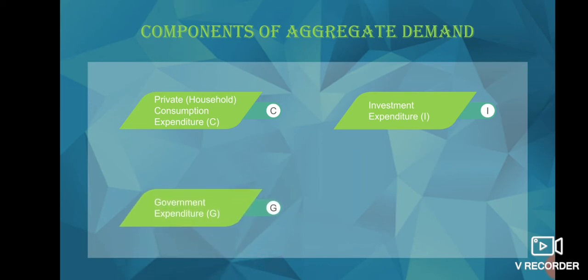Next is government expenditure. As the word suggests, government expenditure is done by the government on consumer goods and capital goods to satisfy the common needs of the economy. Consumption expenditure is used to meet public needs like law and order, education, health, etc. Investment expenditure includes construction of highways, roads, power plants, airports, and seaports.